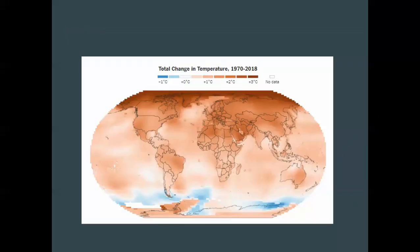So, for example, between 1970 and 2018, the northern part of the globe experienced, in some areas, as much as a 3 degrees Celsius change in its average annual temperature. Now, again, that doesn't sound like a lot to you, but that's a very rapid change in temperature.